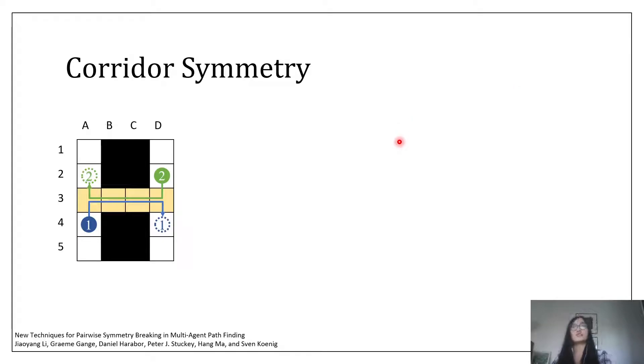In this work, we study two new types of symmetries in MAPF. The first one is corridor symmetry. It happens when two agents travel through a narrow corridor in opposite directions. In this example, the two agents collide in the middle at time step 3.